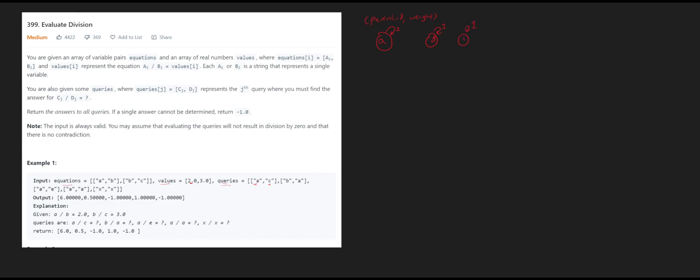Whenever we want to link these nodes is when we know there's a value that we can link them to. In this case, for A over B, when we run the union function and pass it A, B, and 2, the resulting graph is going to have A with weight 2, B still loops around itself with 1, and C's own parent is also 1.